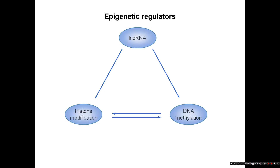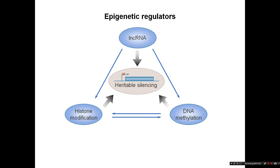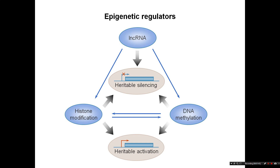Typical sorts of epigenetic regulators include histone modifications, DNA methylation, and long non-coding RNA. These can work together to either make silencing — and we know silencing can be heritable, we just don't know whether it's always inherited during mitosis — and also to activate gene expression.